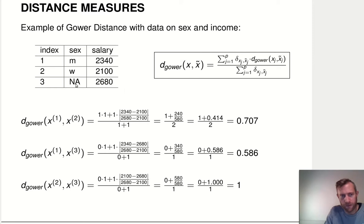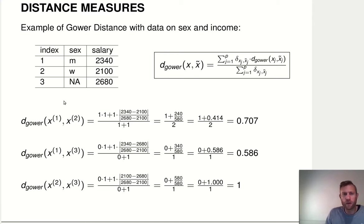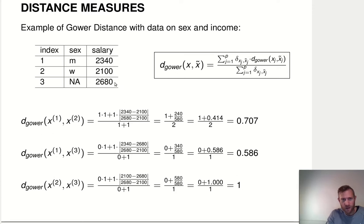There's an example of computing the Gower distance with data on sex and income. For the distance in terms of salary between objects one and two: it's the difference 2340 minus 2100, divided by the maximum minus the minimum — the maximal possible difference.